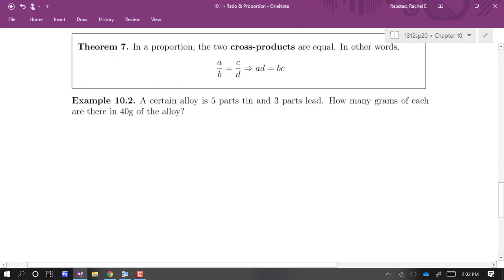So as an example here, a certain alloy is 5 parts tin and 3 parts lead. How many grams of each are there in 40 grams of the alloy? So it might seem at first like we want to make a ratio of tin to lead. But what we know is that we have 40 grams of the alloy. That's like a total, right? That's not just tin and that's not just lead. So this is a total.